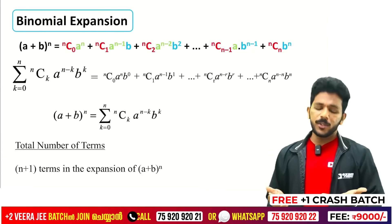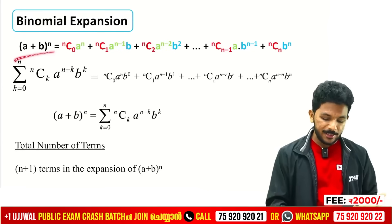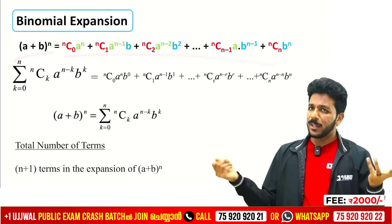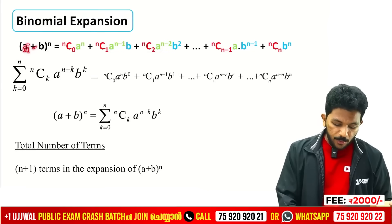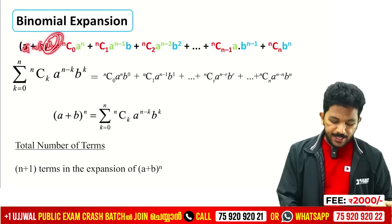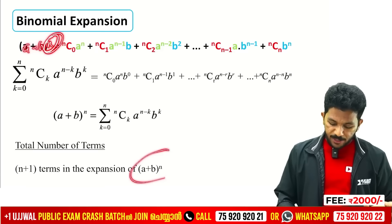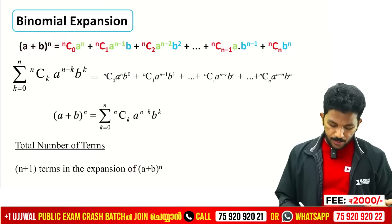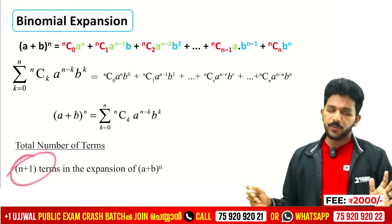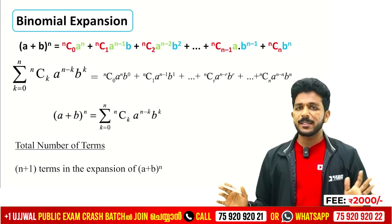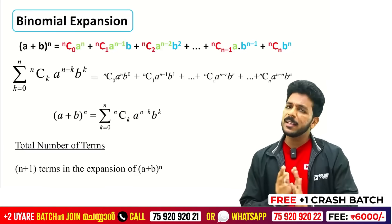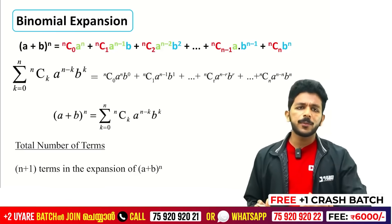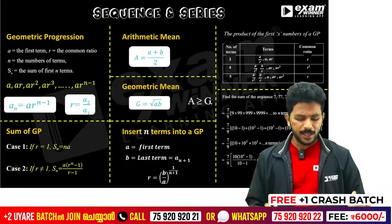Binomial expansion: (a plus b) raised to n — the index is n. There are n plus 1 terms in the expansion. Different questions practice — we will see.